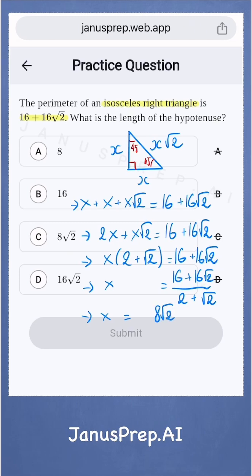Remember that the hypotenuse is x times square root of 2. Substituting, x equals 8 times square root of 2.